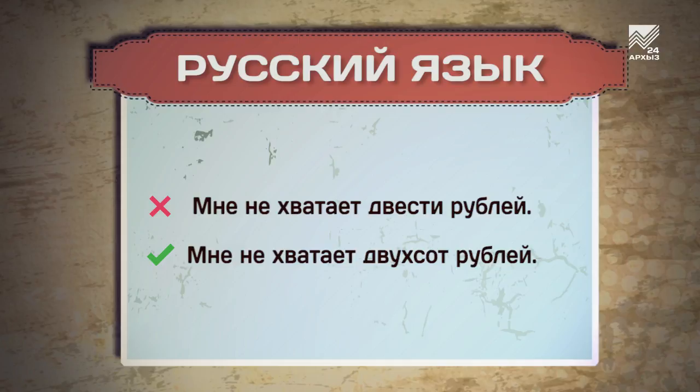200, 300, 400, а также последующие сотни, оканчивающиеся на 100. Числительное 200 не только забывают склонять, но и зачастую делают это некорректно. У меня нет 200 рублей — родительный падеж от слова 200. Только одна форма: 200, соответственно будет 300, 400, 500 и так далее.